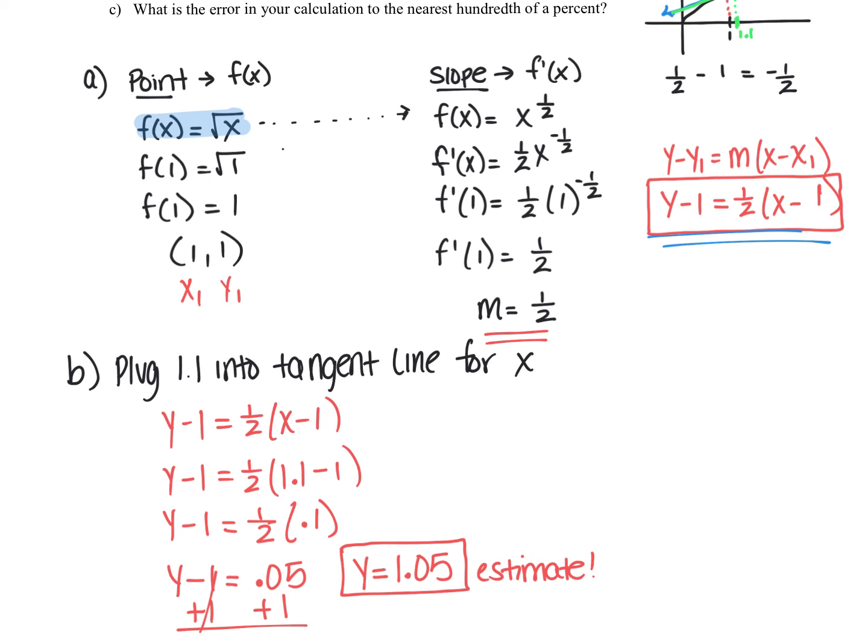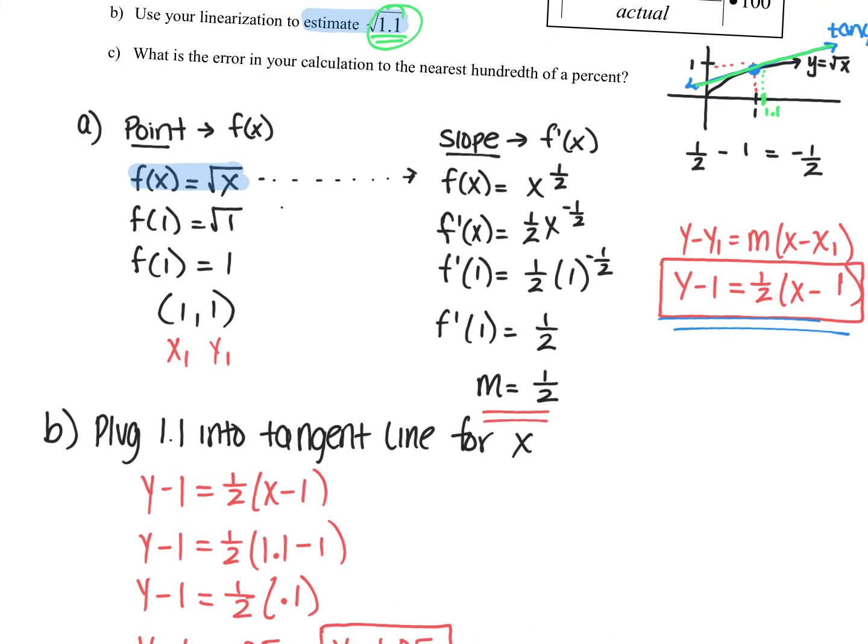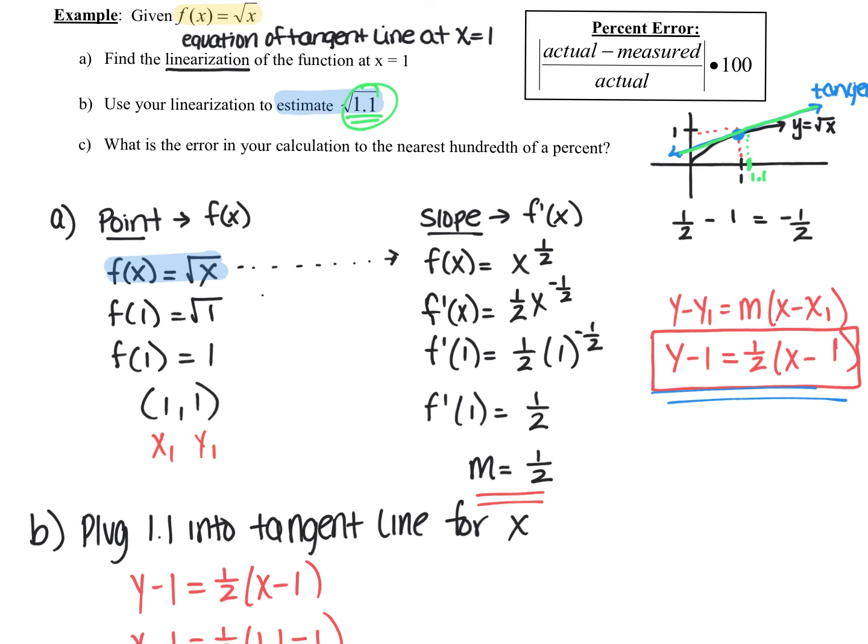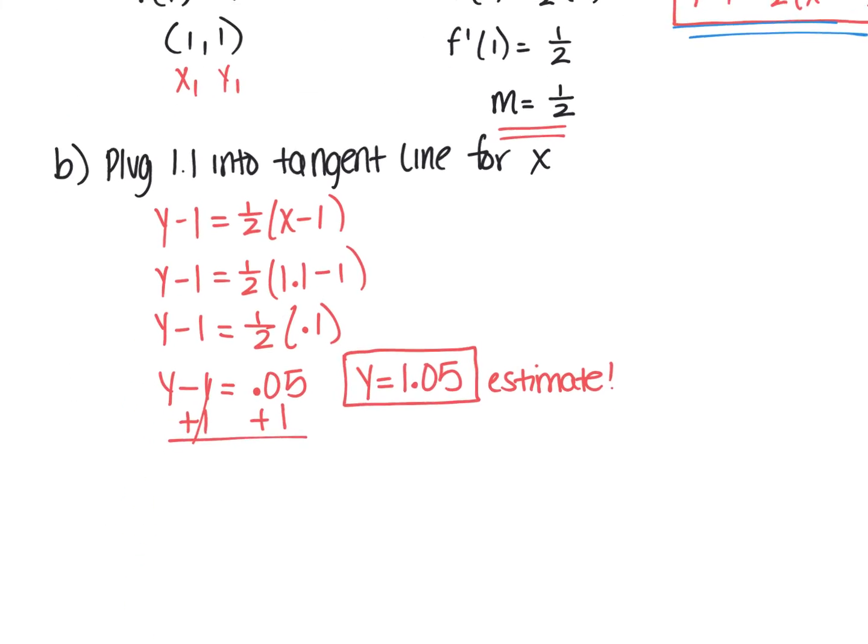Now what we can do next in part c is we can actually calculate the error in using this method because obviously this method is not foolproof. So if I want to calculate the error, I need to find the actual value of what it should be and what the measured value is. So the actual value is the value that you would get if you would plug it into the calculator. The measured value is what we just got. So here's the formula for percent error and let's do that. So we'll call this part c.